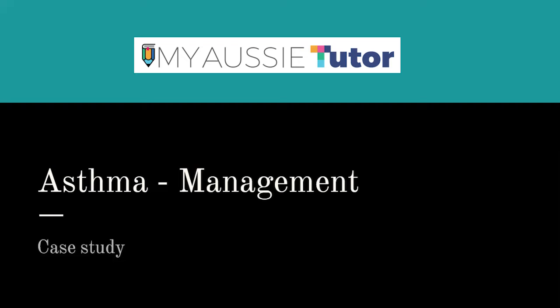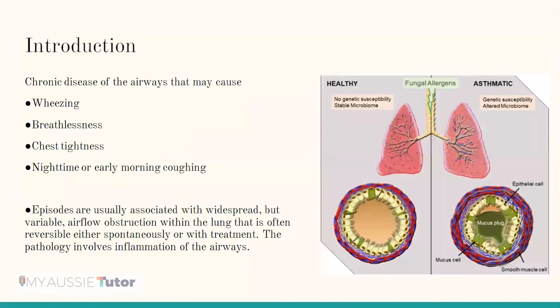Let's begin with understanding what asthma is, what the condition is, how it can develop, how it progresses, and how we can manage it. Asthma is defined as a chronic disease of the airways that might cause wheezing, breathlessness, tightness, and nighttime or early morning coughing. Episodes are usually associated with widespread but variable airflow obstruction within the lung that is often reversible either spontaneously or with treatment.